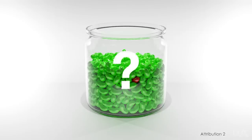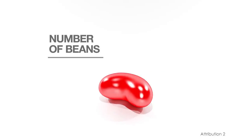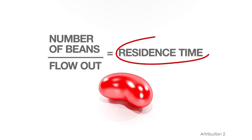So how long should we expect a red jelly bean to remain in the jar before I take it out and eat it? It turns out that the average time that a single bean stays in the jar is the number of jelly beans in the jar divided by the flow of jelly beans out of the jar. This is known as the residence time and in this case turns out to be only about 4 months.